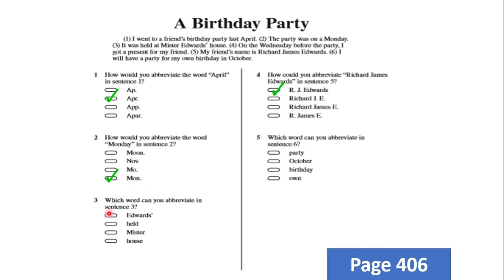Number three on your own. Number four: how could you abbreviate Richard James Edwards? My friend's name is Richard James Edwards. We can abbreviate names by writing the first letter and then a dot — first letter dot, first letter dot, just like that.